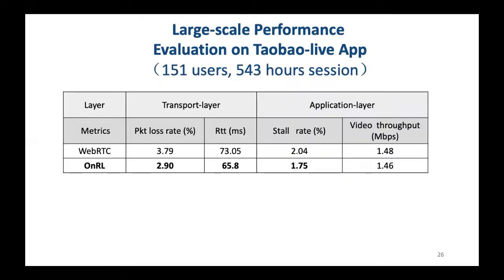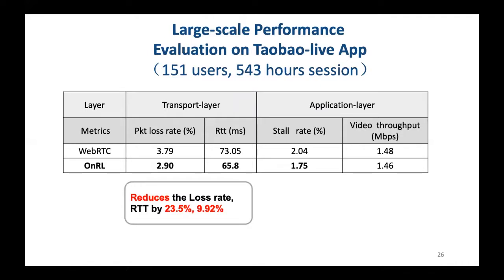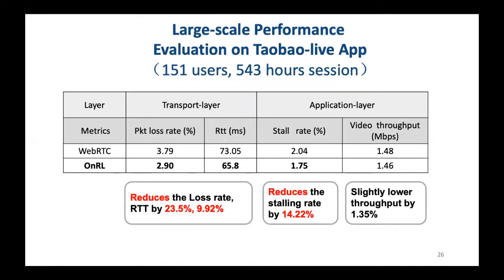We distributed a beta version of Taobao Live equipped with OnRR to real users for a large-scale system-level evaluation. There were 151 users from 30 cities, and we collected 543 hours of video telephony sessions. We observe that OnRR achieves remarkable improvement in transport layer metrics, and these advantages transform into application layer performance gains. For example, it reduces stalling rate by 14.22% while maintaining almost the same video throughput. Please check our paper for more evaluation, including OnRR's performance breakdown on various network environments and OnRR's switching frequency with the safe policy.